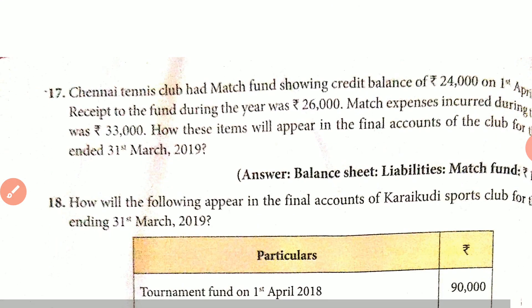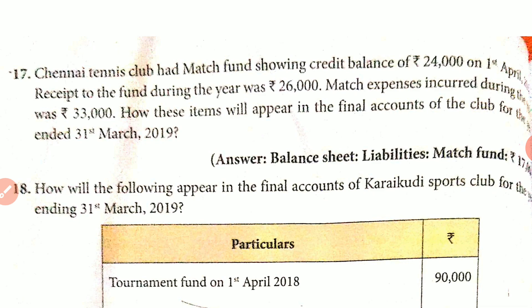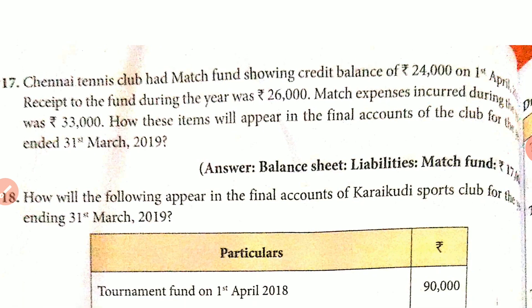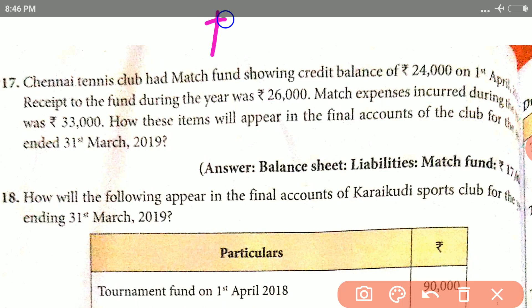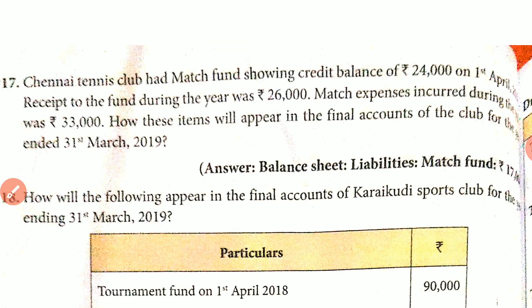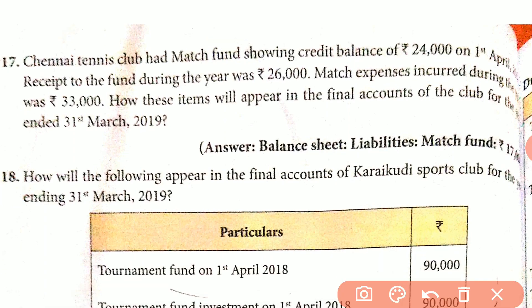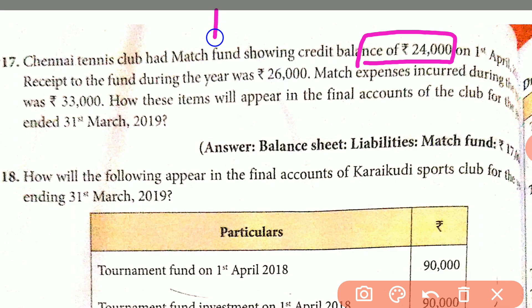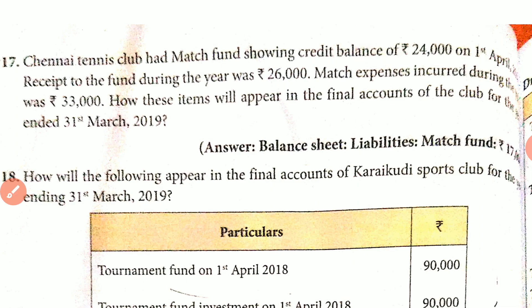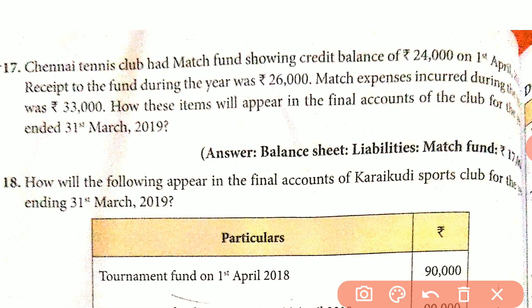In the 17th sum, Chennai Tennis Club had match funds with a credit balance of $24,000 on 1st April. Receipts to the fund during the year were $26,000, and match expenses incurred during the year were $33,000. The question asks how these items will appear in the final accounts of the club. Now we have $24,000 and the other account will be $26,000.